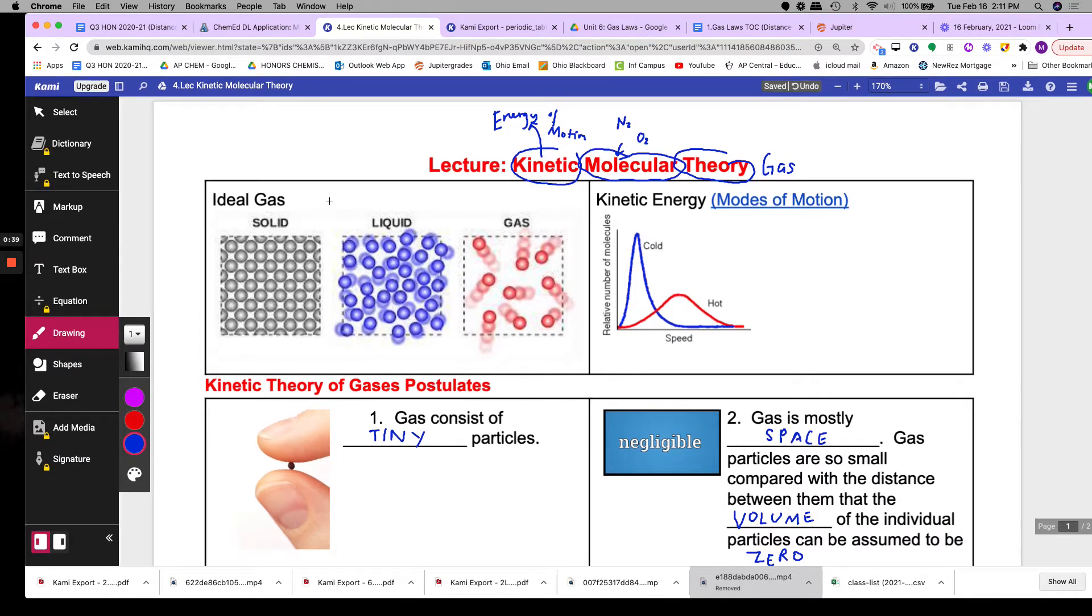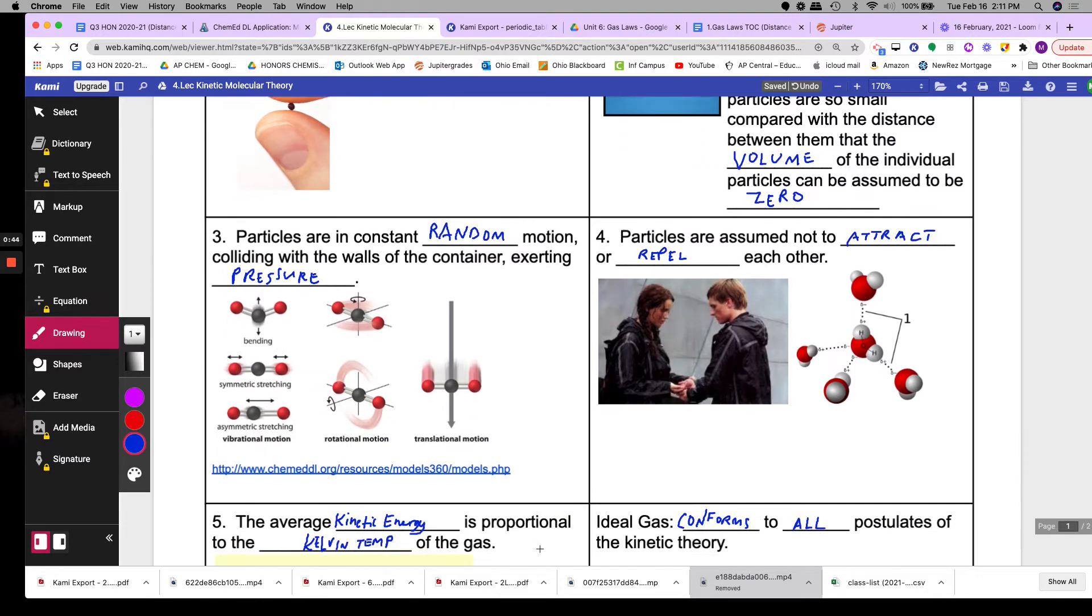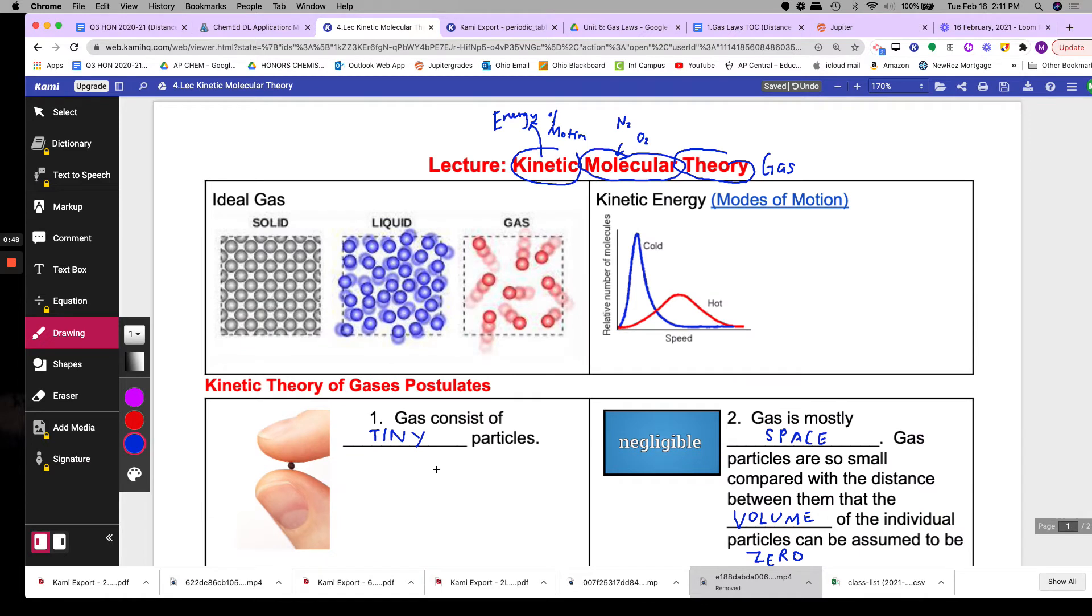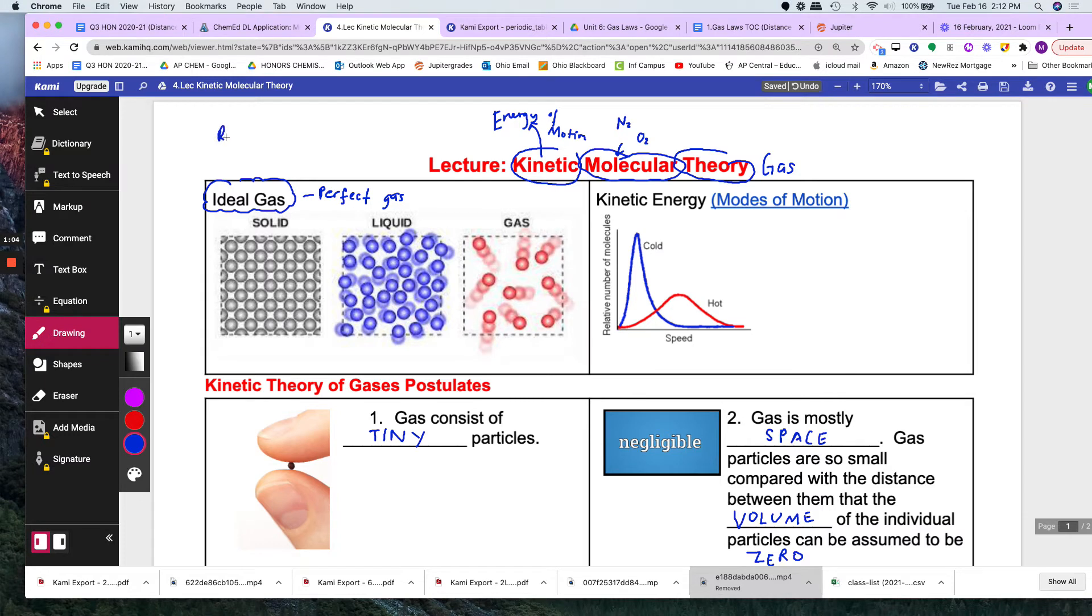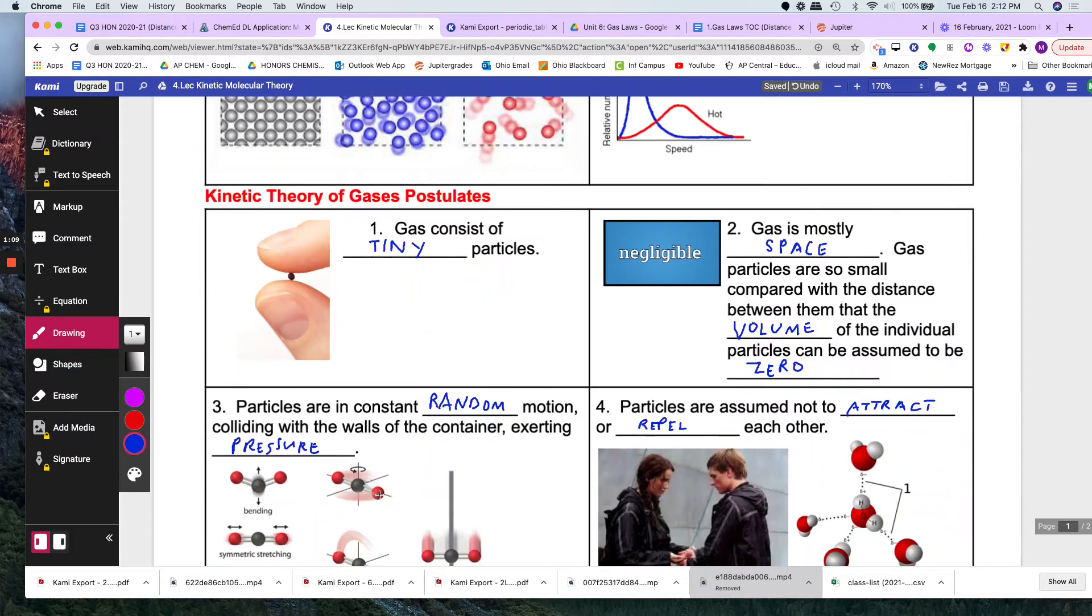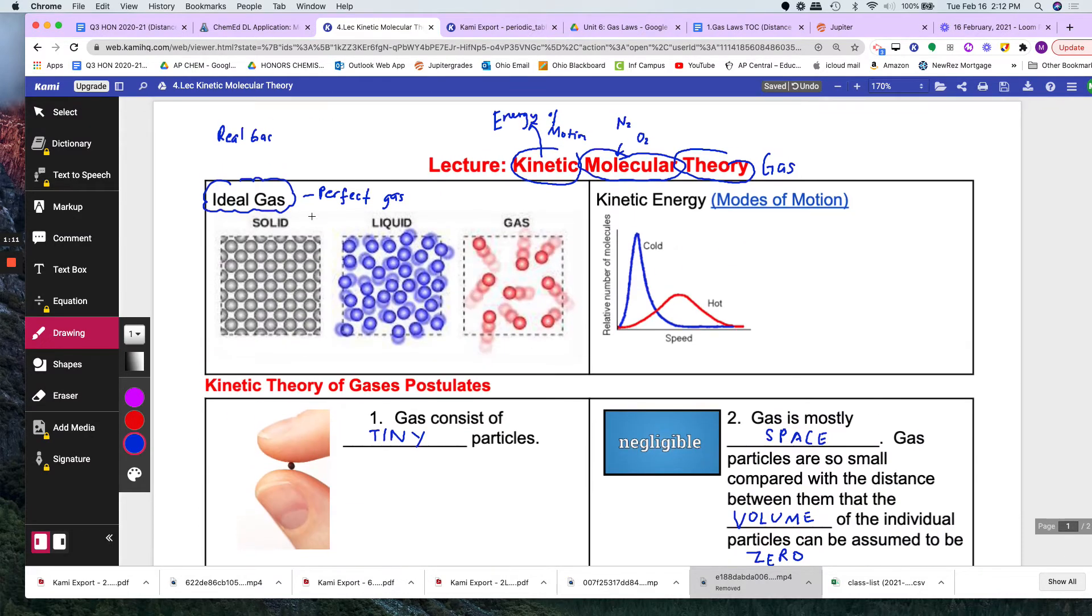So first let me give you a disclaimer that all these postulates that tell us how gas molecules move is based on the ideal gas. The ideal gas is the perfect gas. So the real gas as opposed to the ideal gas might not conform to all these parts but will be really close. But if you had a perfect gas how would they behave and they would behave like this.